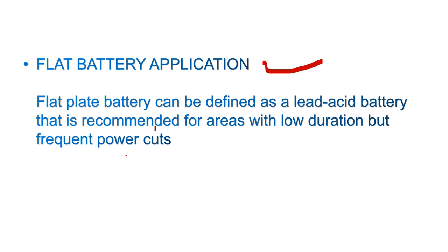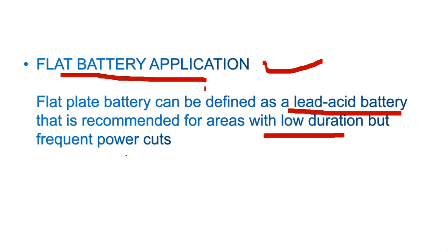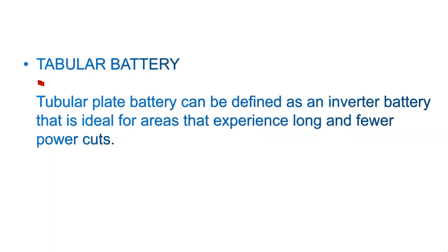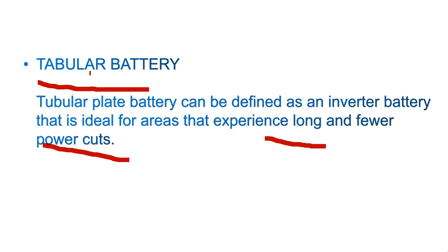The flat plate battery is a lead acid battery used where there are frequent but short power cuts — like 10 minutes, 20 minutes, or up to half an hour to one hour. If you need more than two to three hours of backup, you must go for a tubular battery. Tubular batteries are designed for longer power cuts and have much greater capacity to withstand longer backup times.